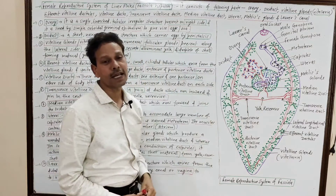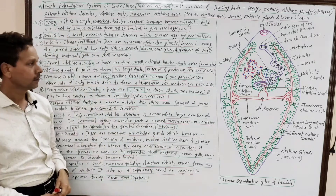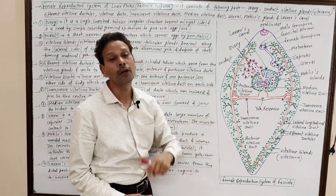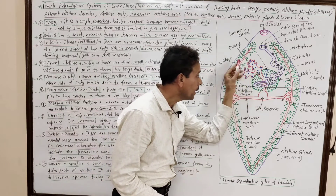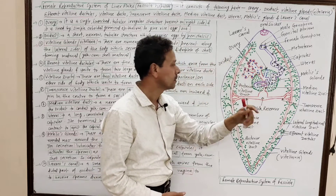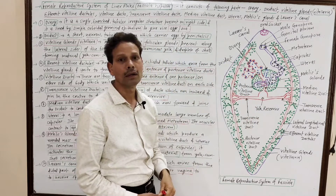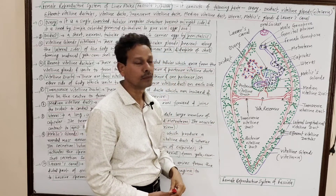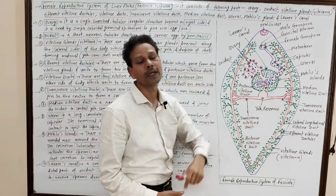The second point is the oviduct. This is a small tubular structure, and the oviduct conducts the ova from the ovary to the uterus.